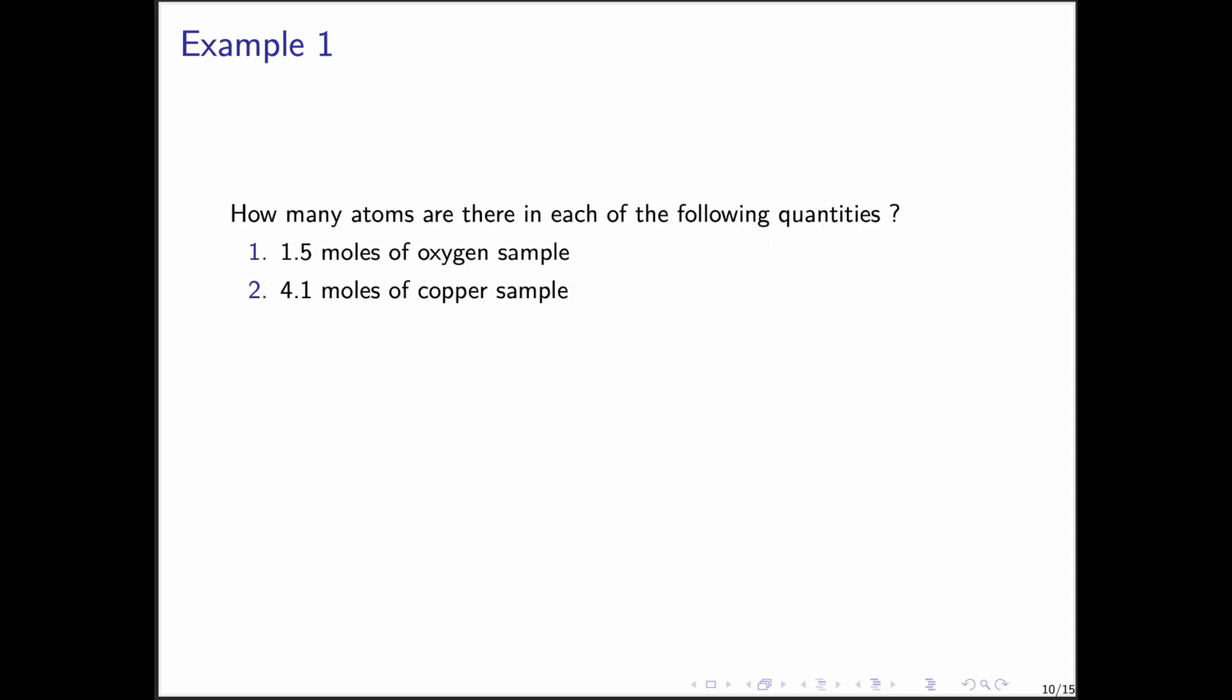Let's practice. How many atoms are there in each of the following quantities? 1.5 moles of oxygen and 4.1 moles of copper. Before checking the answers, pause the video and try solving on a sheet of paper. All right, let's see the solutions. 1.5 moles of oxygen contain 9.03 times 10 to the 23rd atoms, and 4.1 moles of copper contain 2.47 times 10 to the 24th atoms. Remember, in these types of calculations, it's important to solve step by step using dimensional analysis.